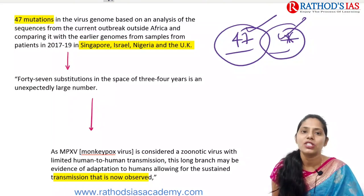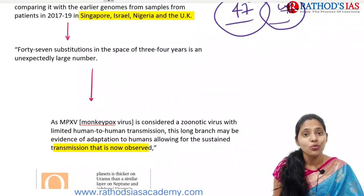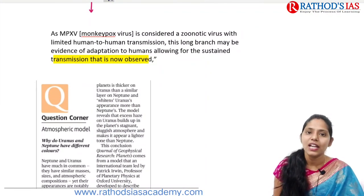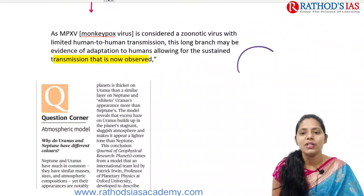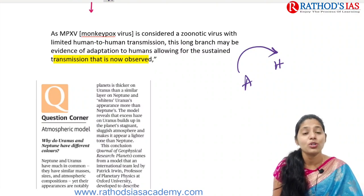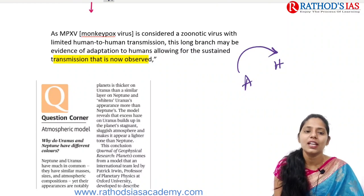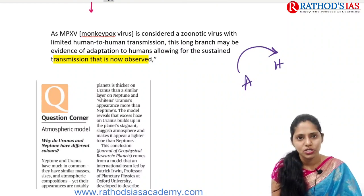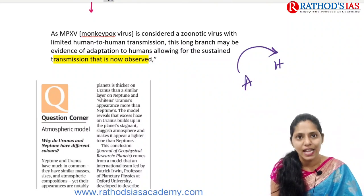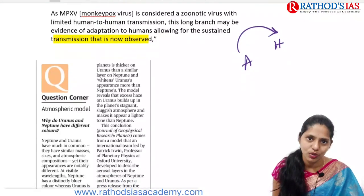About 47 substitutions were seen in the span of just three to four years, which is a very large number. Monkeypox is considered a zoonotic disease — transmitted from animals such as monkeys and rodents to humans. There is also limited human-to-human transmission, and the long branch of mutations may provide evidence that adaptation to humans has happened, which may have led to the human-to-human transmission we are now observing.